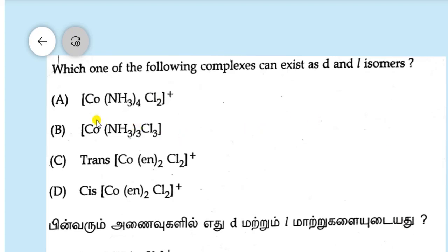In this case, the first one is an octahedral complex, but all of these are monodentate ligands present, so this complex does not show optical isomerism. The second one also has monodentate ligands. NH3 is monodentate and chlorine is monodentate, so it does not show optical isomerism.